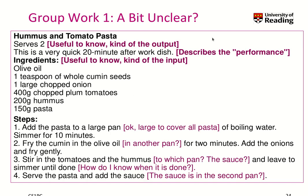Here is a potential answer to this question — it doesn't have to be complete, but here are some thoughts. First of all, we know this is hummus and tomato pasta and it serves two, so that is kind of the output of this algorithm when we run it. We also know a little bit about the performance of the algorithm by knowing it's a quick 20-minute after-work dish. It's really useful to know how long the algorithm would run — 20 minutes. That is already an instance where you learn why performance of an algorithm matters.